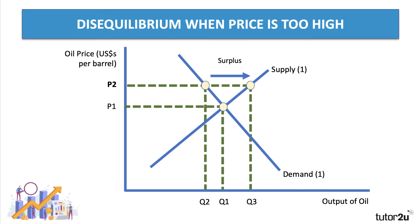At high prices, there's an incentive for suppliers to increase or expand their supply to make a higher profit. Equally, at high prices, consumers have an incentive to cut back on their oil consumption. So typically, high prices — P2 is an example — would lead to a disequilibrium with surplus supply.